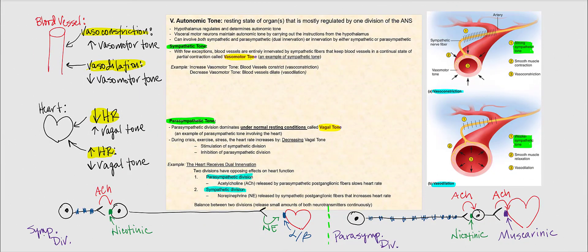Autonomic tone is the resting state of an organ or organs that is mostly regulated by one division of the autonomic nervous system, either the sympathetic or parasympathetic division. The hypothalamus will regulate and determine autonomic tone, while the visceral motor neurons will maintain autonomic tone by carrying out the instructions from the hypothalamus.